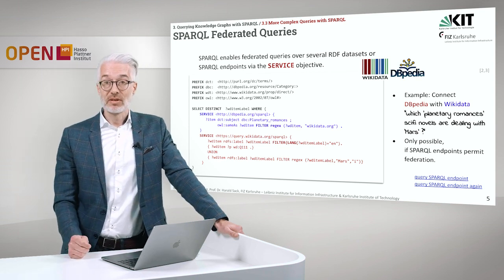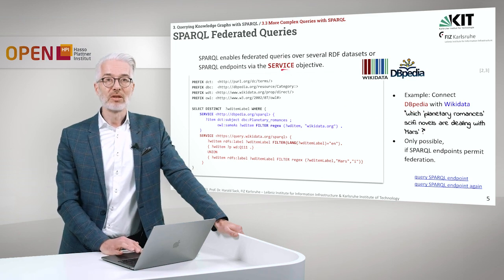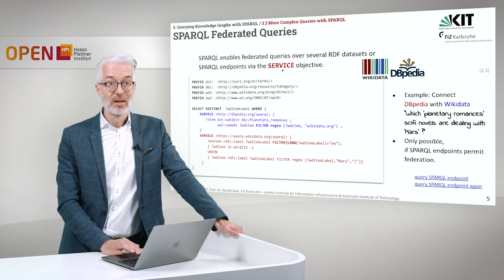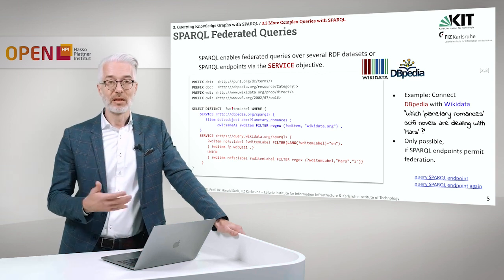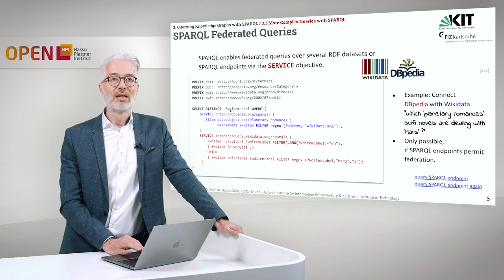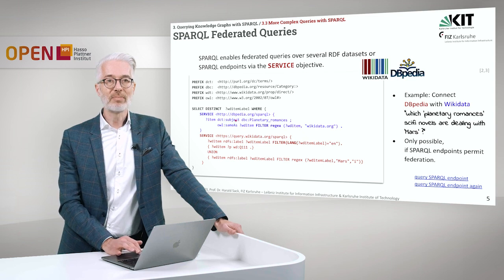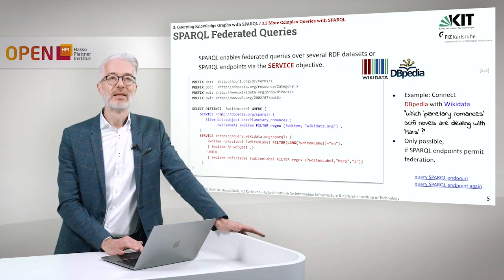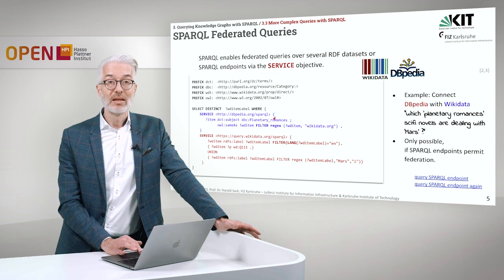SPARQL enables federated query services over several RDF datasets or SPARQL endpoints, and the way to do that is arranged with a so-called SERVICE directive. The SERVICE directive you see here in our query. What we are querying here is we SELECT DISTINCT — because there might be multiple — and we want only unique labels. The labels of all of the items selected here; WD refers to the item from Wikidata. But first let's take a look at the blue part, which is the DBpedia part.